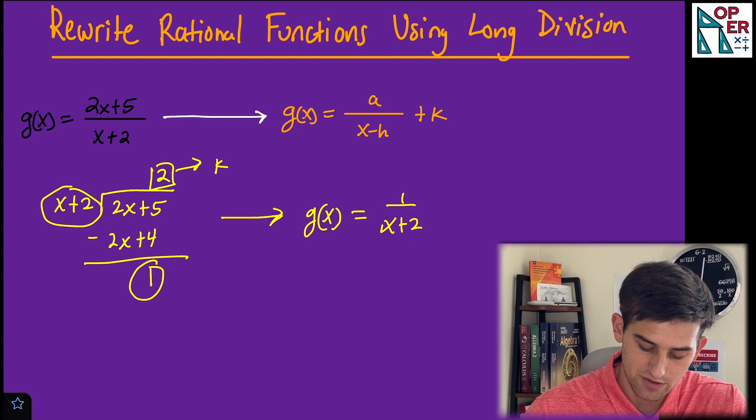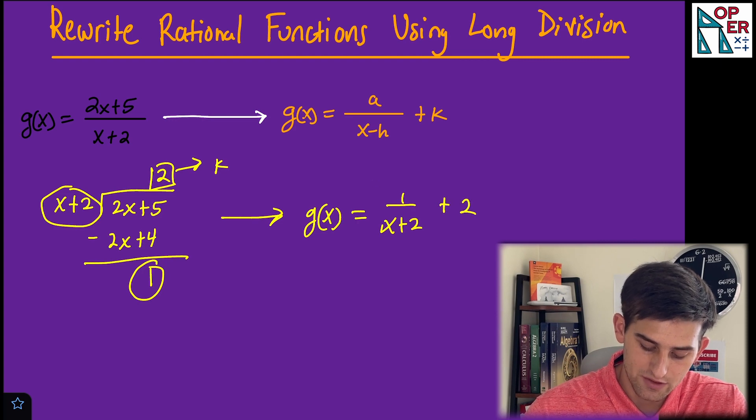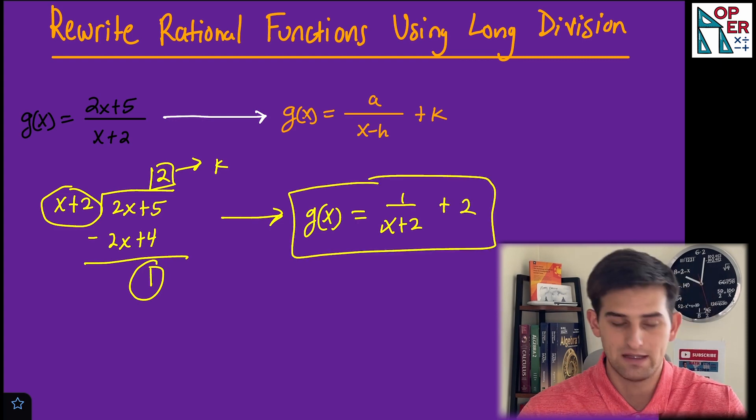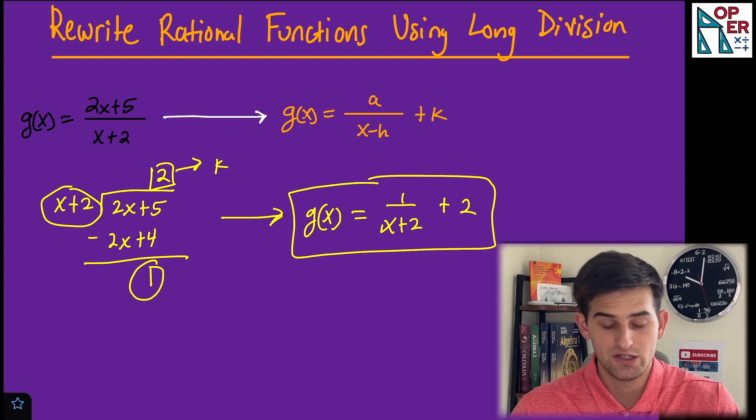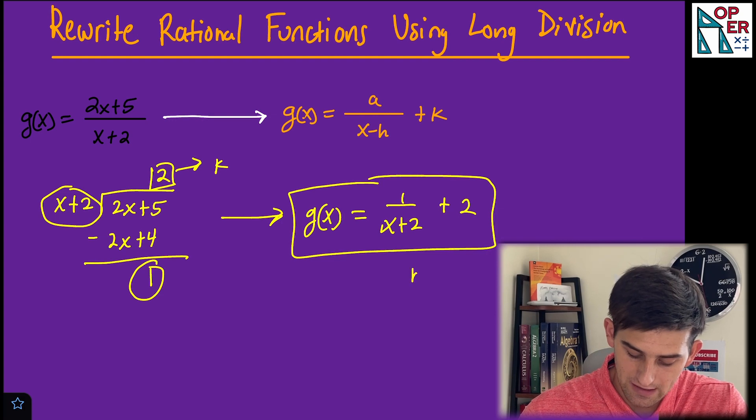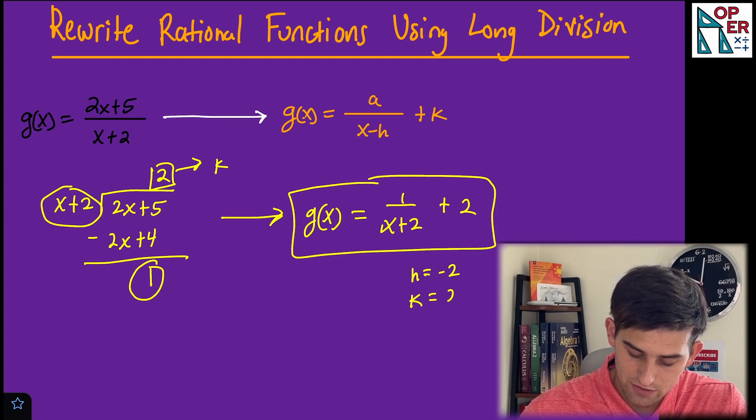So 1/(x + 2) plus 2 on the outside. That's us rewriting our original g(x) function so we can identify h and k. Now we know that h equals negative 2 and k equals positive 2.